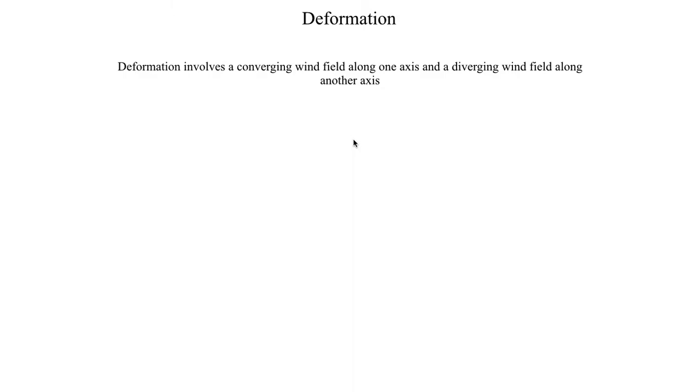So first let's go ahead and define what we mean by a deformation pattern. The whole idea behind a deformation pattern is you have winds going towards a common point along one axis and then winds going away from a common point along another axis. Just using a verbal description may not be very illustrative, so let's go ahead and take a look at an illustration to get a better idea of what exactly we mean by all this word salad that we have up on the screen here.